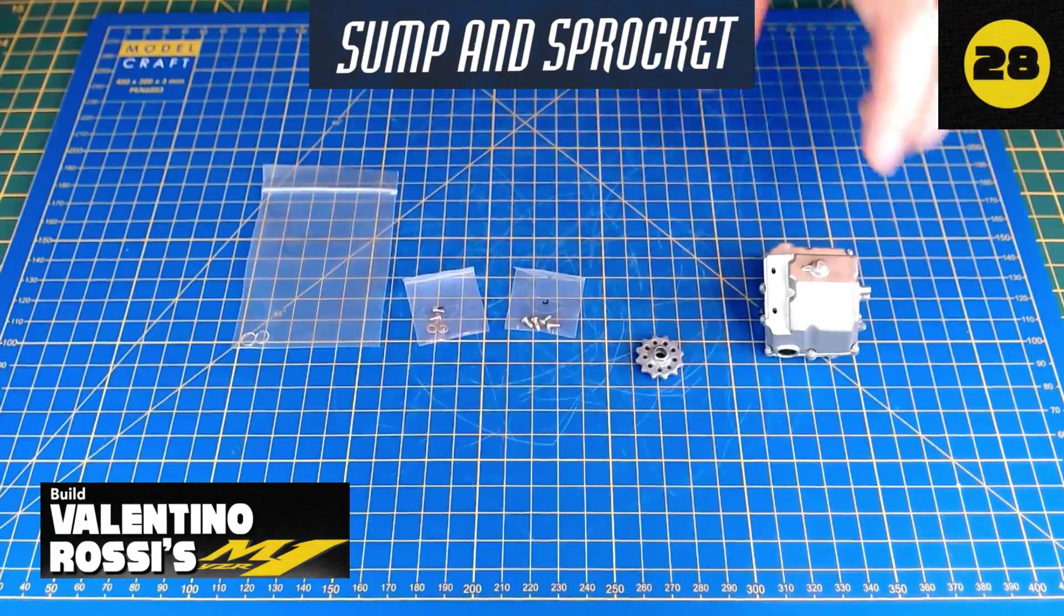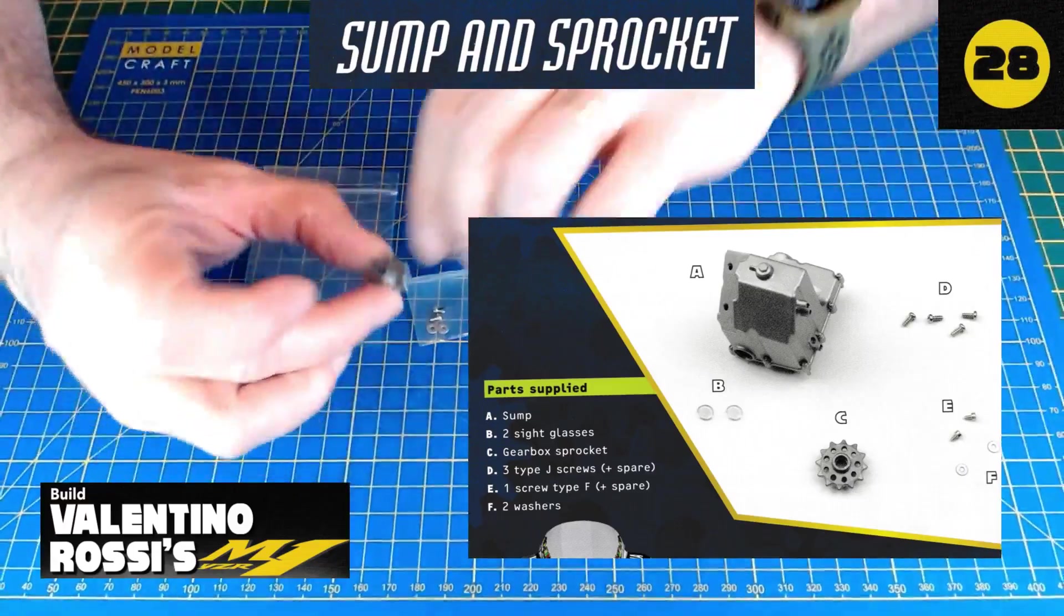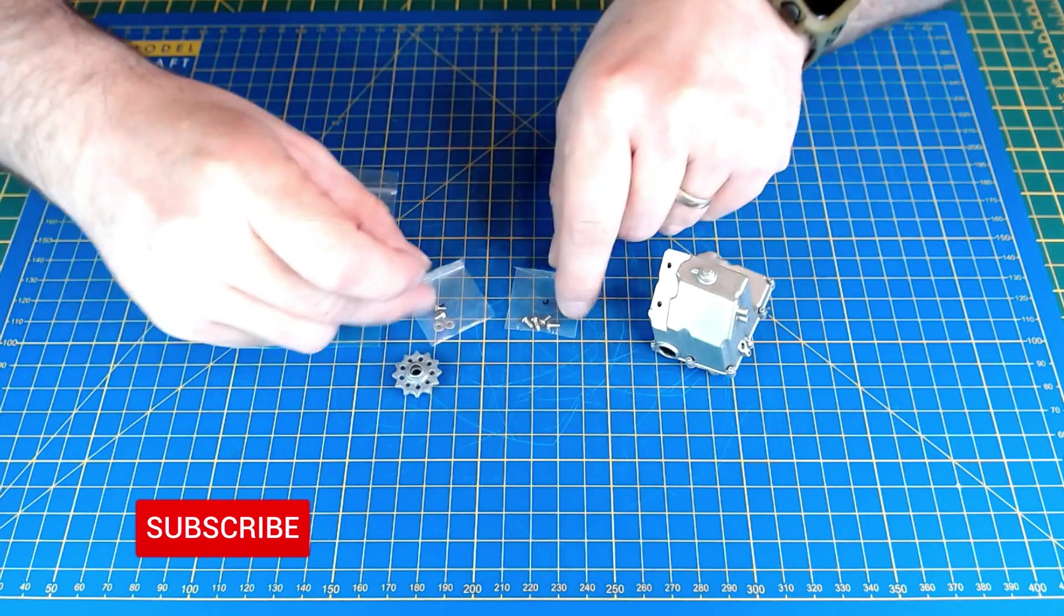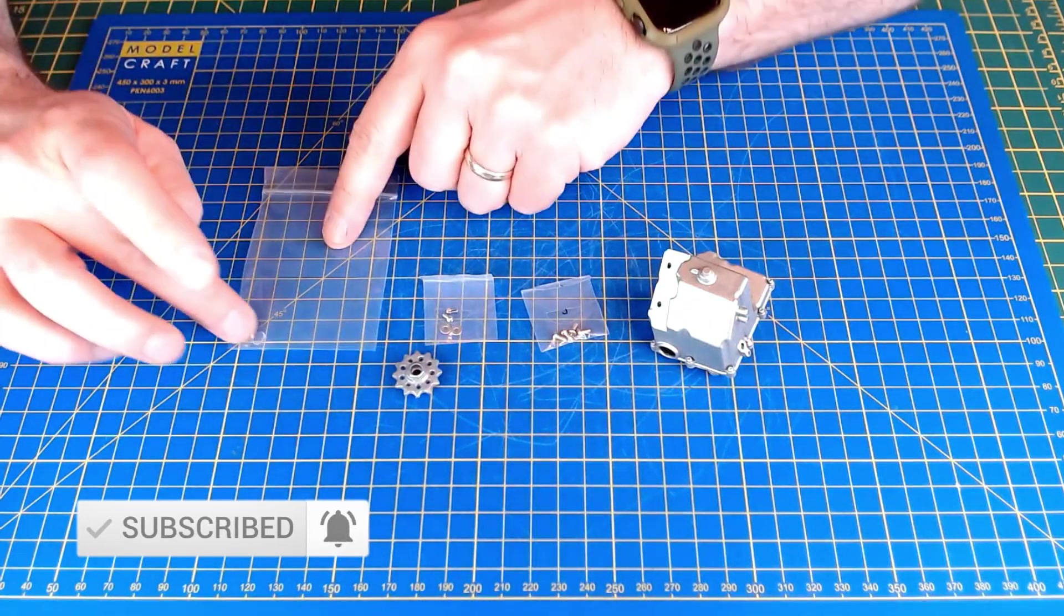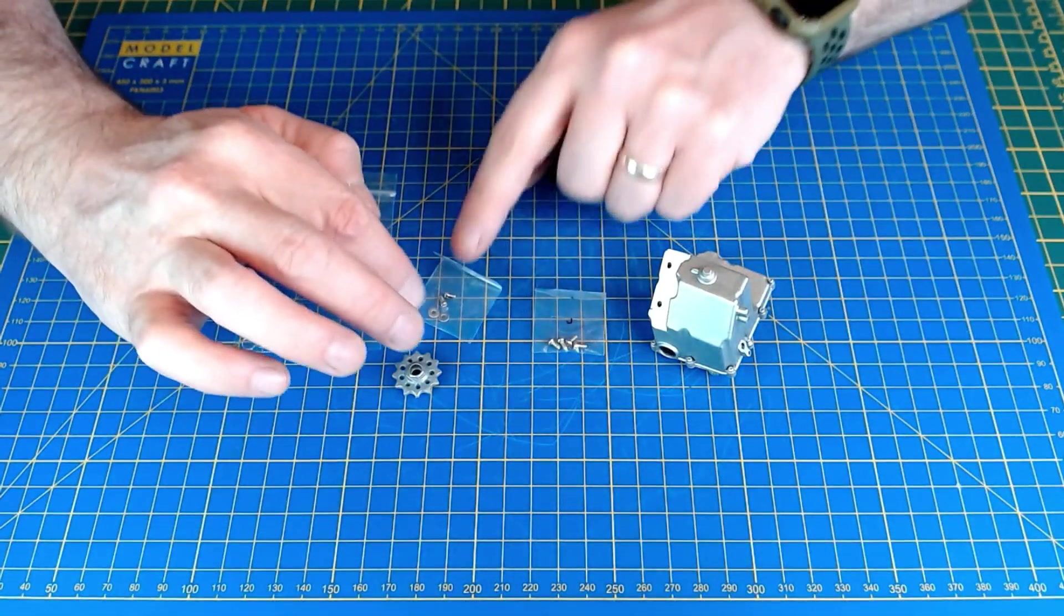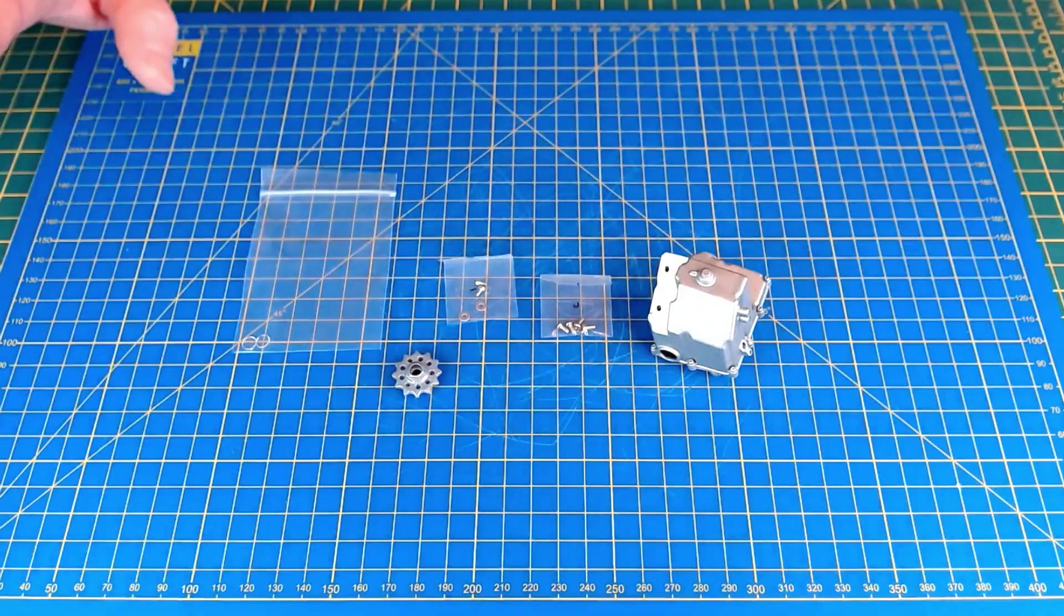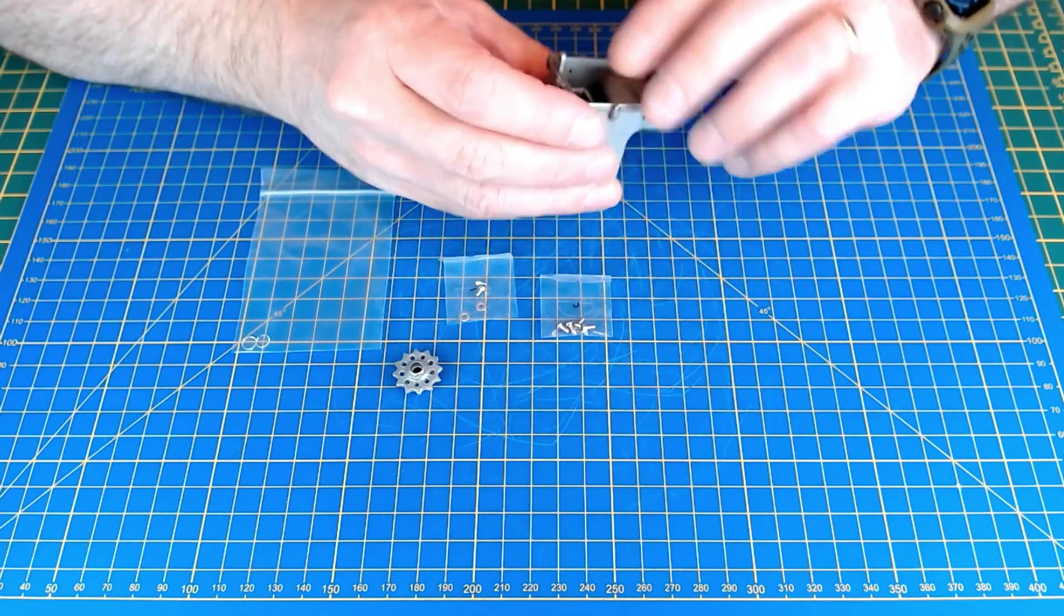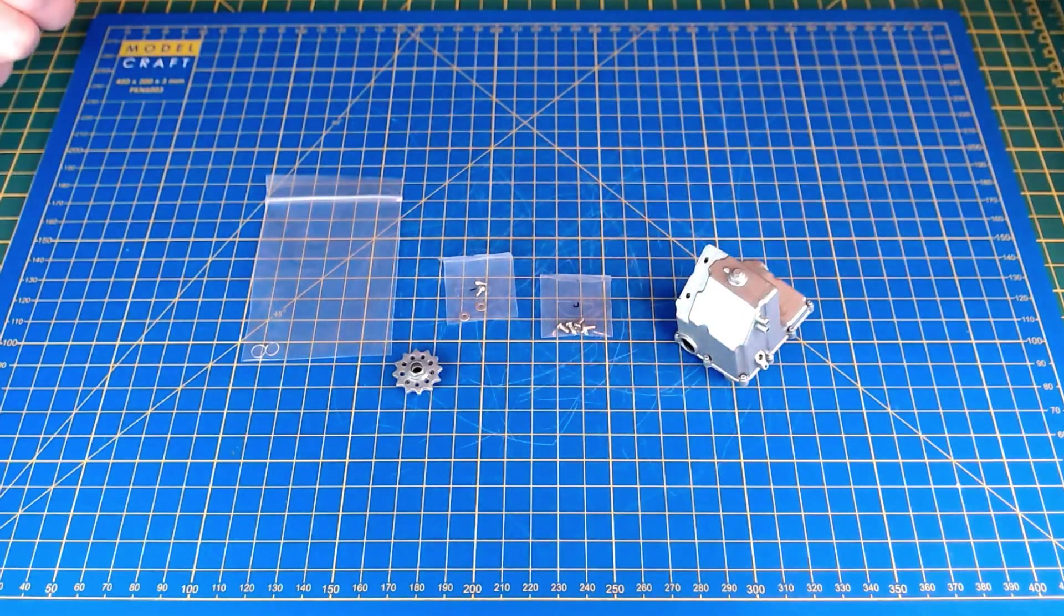Okay, so the parts are laid out here for issue 28 of the Valentino Rossi bike. It's the sump, got a sprocket which is actually metal, and I've kept these parts in the bag just because I don't want them to get damaged or lost. We've got a couple of sight glasses and some screws and washers. It's quite nicely detailed, as everything is on this one-fourth scale engine. Just going to get this fitted onto the engine—it's the sump and sprocket for issue 28.